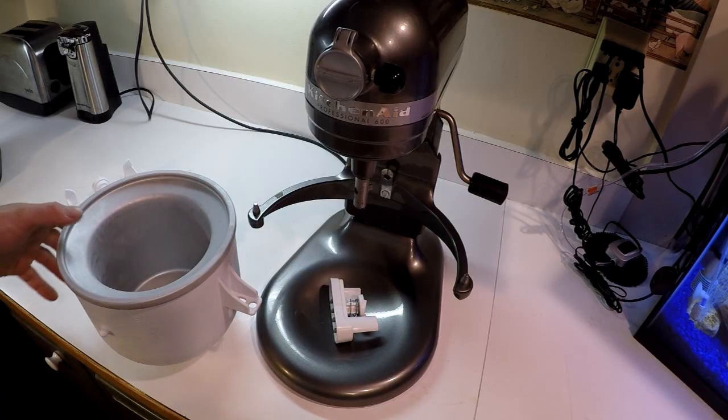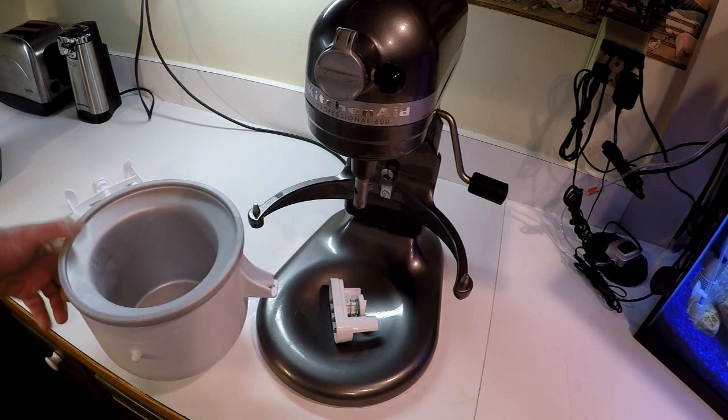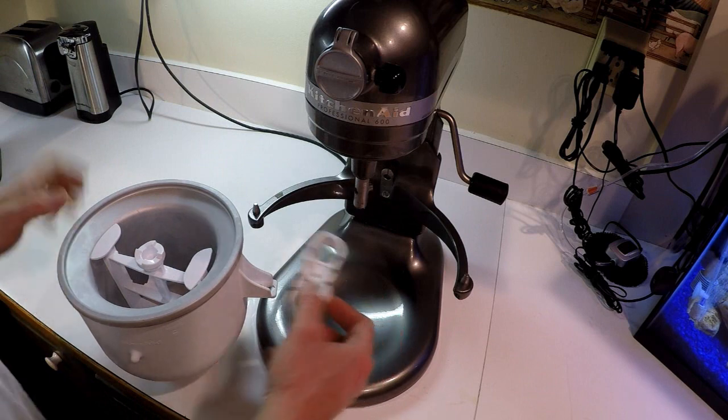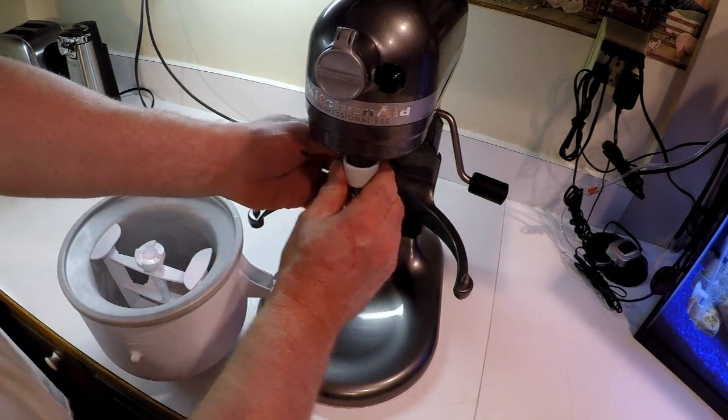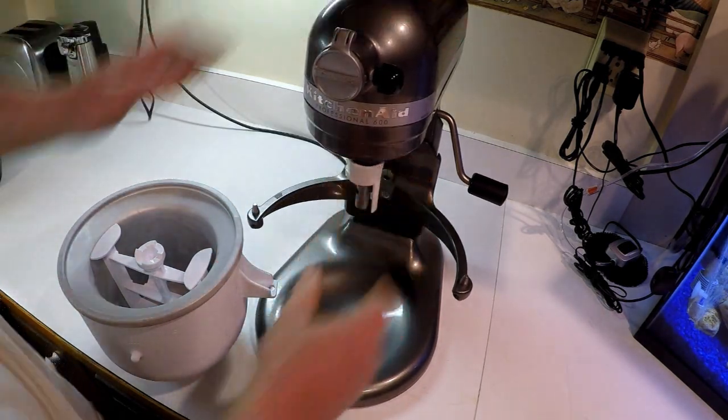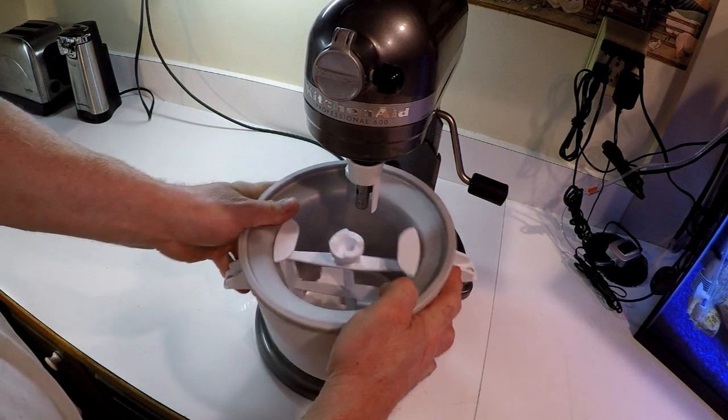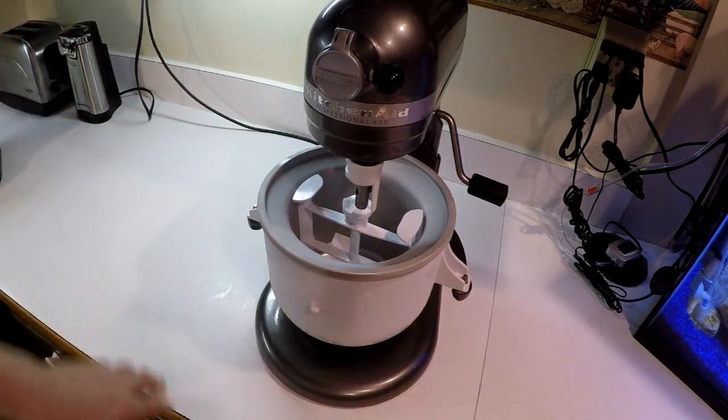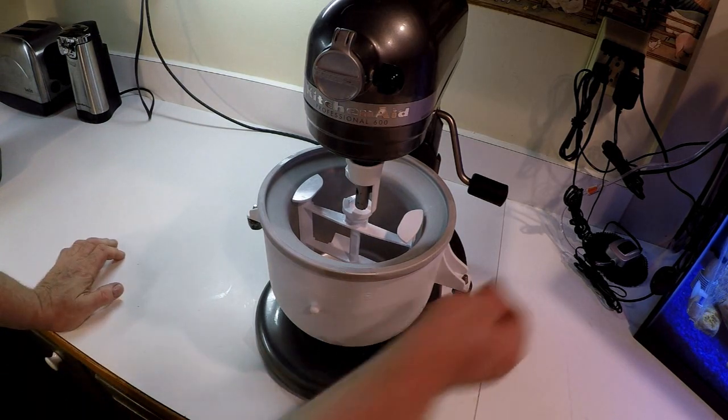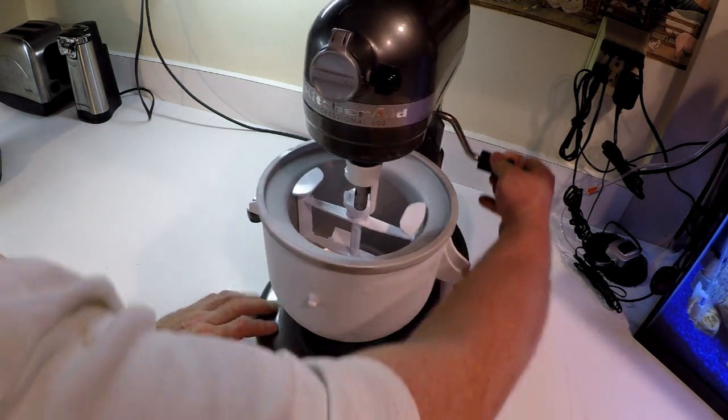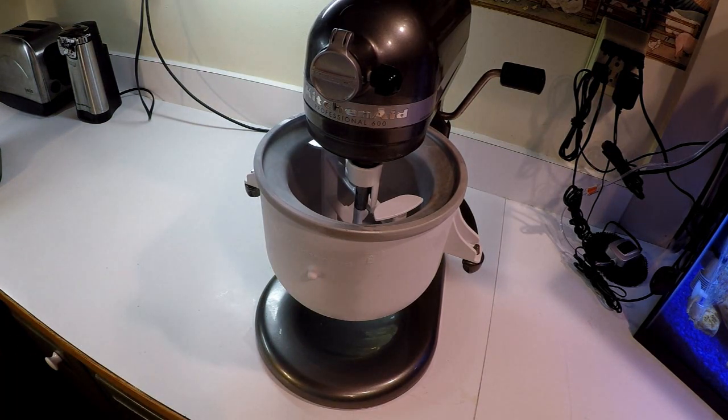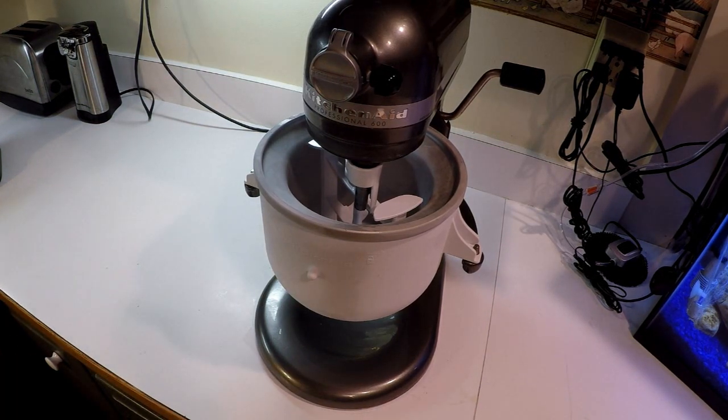So we got our KitchenAid ice cream bowl out. And we're going to put this part down into the bowl. And then this part goes on the top piece. Now we're ready to line it up. Now we're ready to pour our mixture in. Get it out of the fridge.